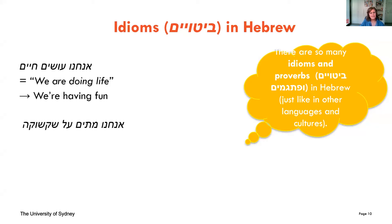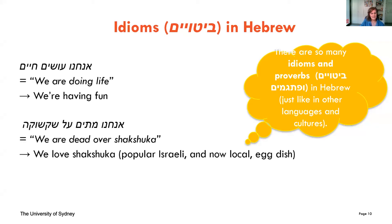Another idiom is 'anachnu metim al shakshuka,' which literally translates as 'we are dead over shakshuka,' making little sense. But in Hebrew it means 'we love shakshuka' — which you might know is a very popular Israeli and now widely-known egg dish. If you haven't tried shakshuka yet, I strongly recommend you do. You can find it in many restaurants around Sydney.